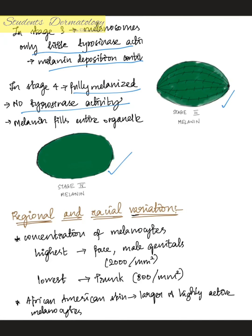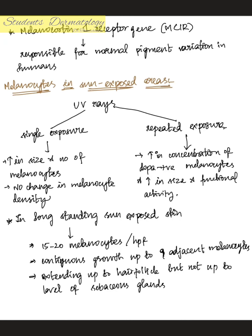Regarding regional and racial variation: the concentration of melanocytes is highest in the face and male genitals, at about 2,000 melanocytes per square millimeter, whereas it is lowest in the trunk at about 800 per square millimeter. In African American skin, melanosomes are large and highly melanized. The melanocortin-1 receptor gene MC1R is responsible for normal pigment variation in humans.